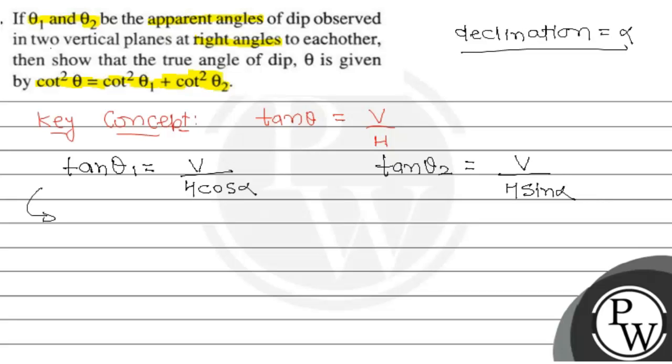So, if I change this to cotangent form, cot θ₁ will equal H cos alpha upon V, or cot θ₂ will be equal to H sin alpha upon V.